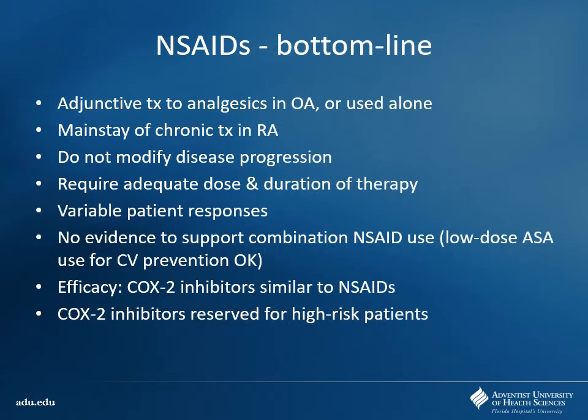You can use NSAIDs for osteoarthritis as well, though we like to limit that as best we can. If we can get away with just using Tylenol for patients with mild disease, that's more beneficial. But NSAIDs remain a mainstay of RA therapy. Keep in mind these do not change anything about disease progression — they don't slow anything down. This is purely for symptomatic management. Make sure you're titrating your dose effectively and that the duration of therapy is appropriate for that patient.